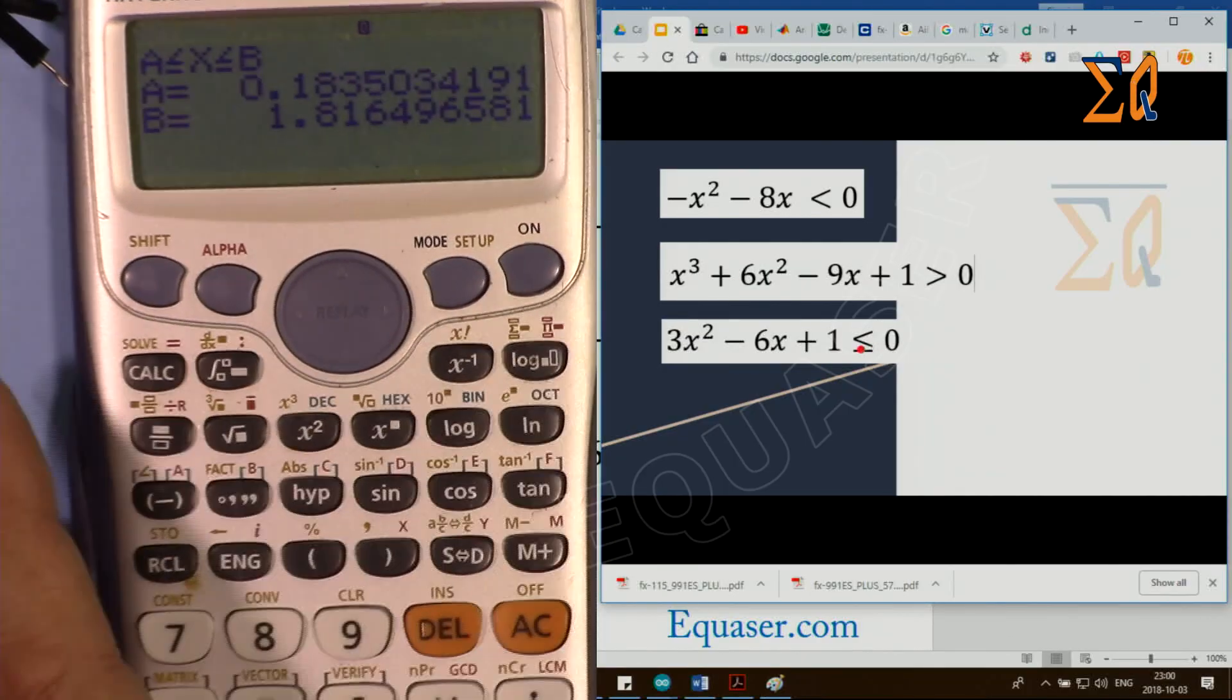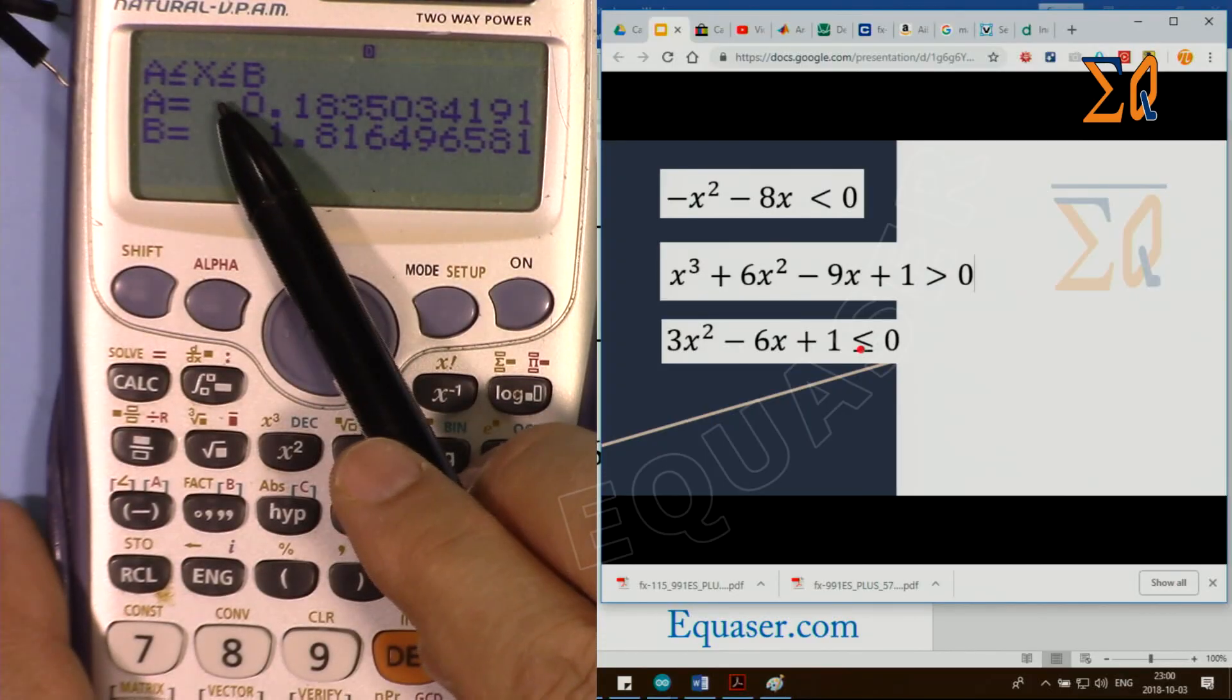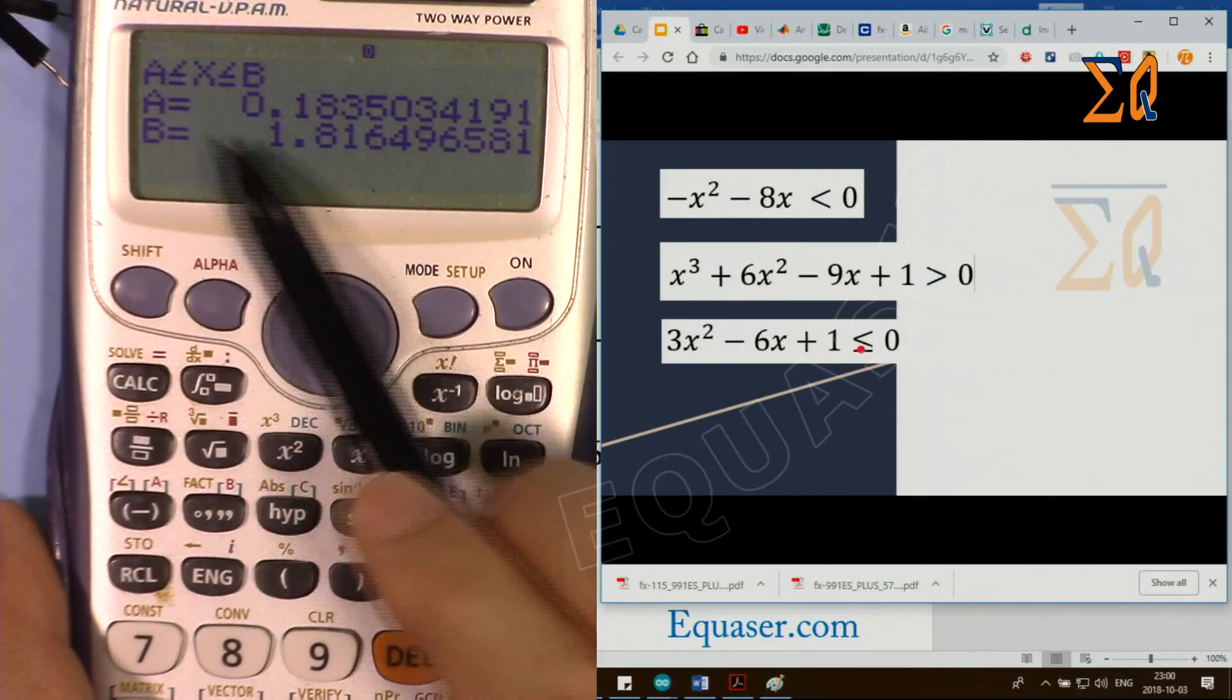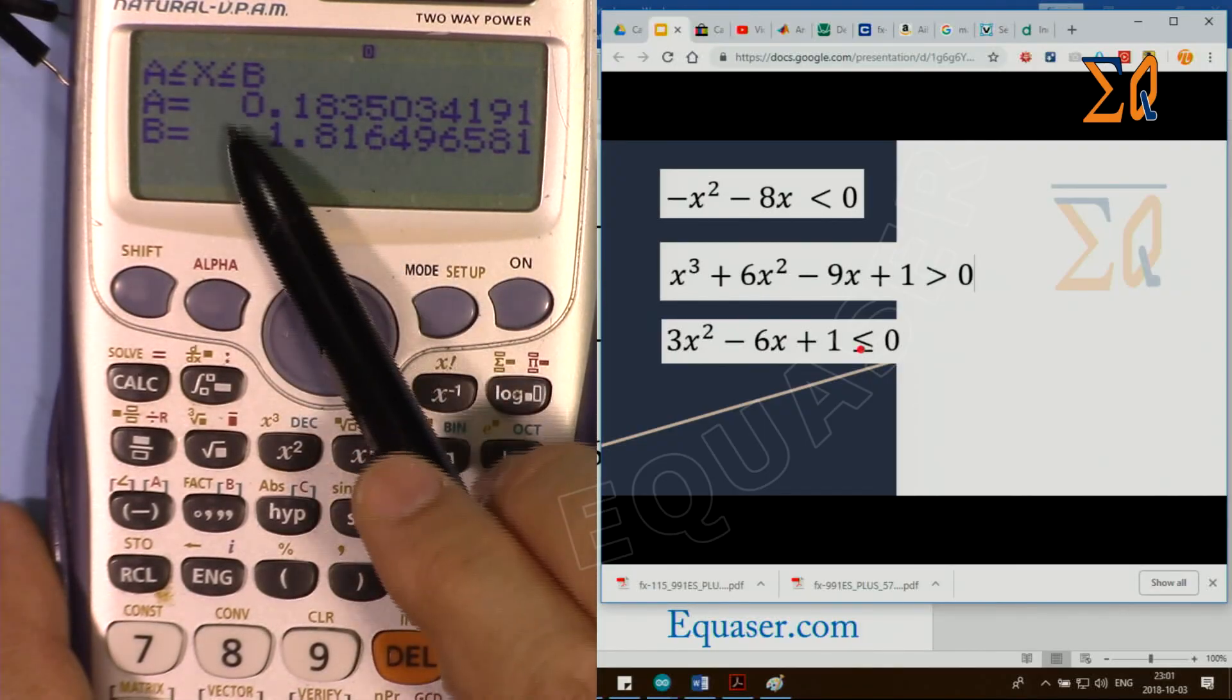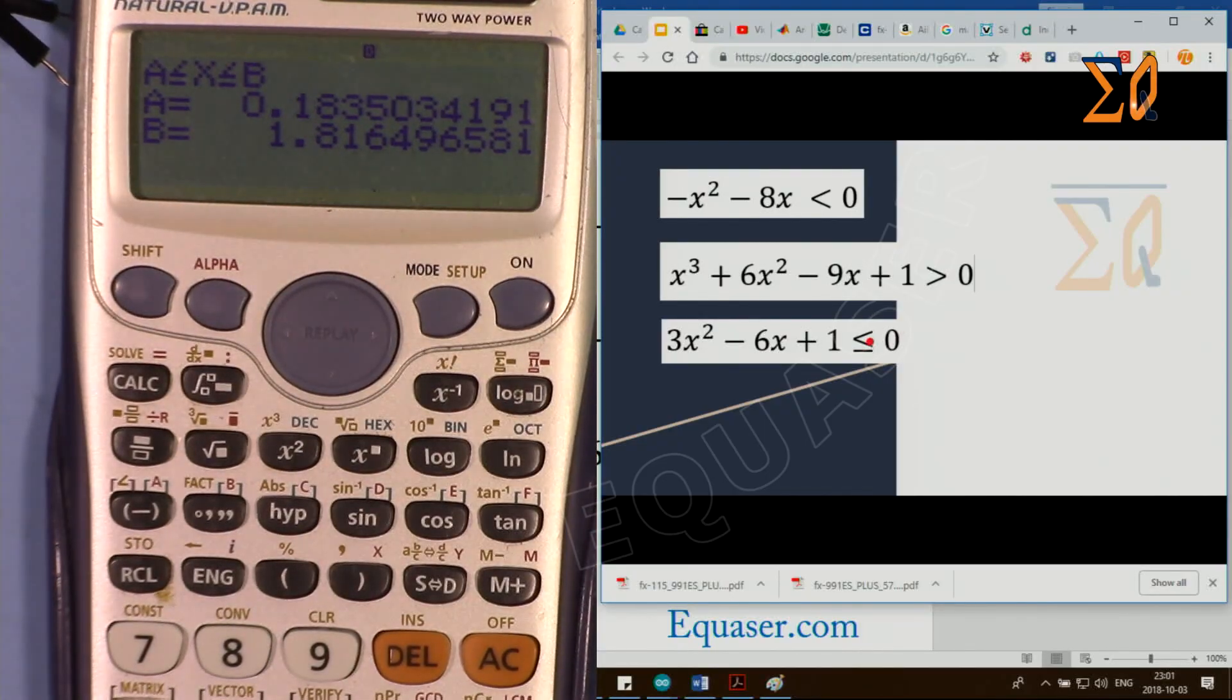Then press equal. Now it shows that when x is bigger than 0.18 and smaller than b, which is 1.8, y would be smaller than 0.